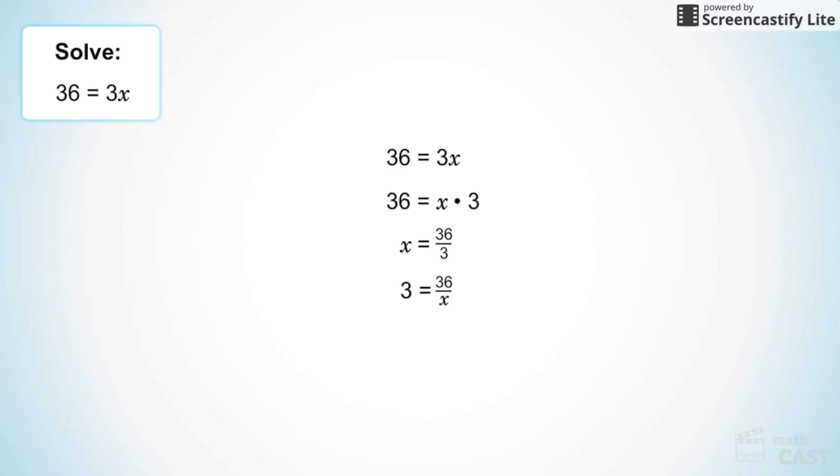To solve for x, I must select an equation in which the variable is alone on one side of the equation. Which equation should I select? The only equation in which the variable is alone on one side is c. x equals 36 divided by 3. I can simplify the division on the right side to solve for x. 36 divided by 3 is 12.